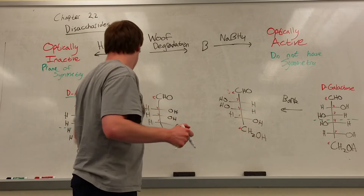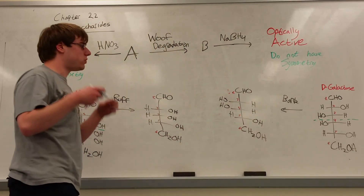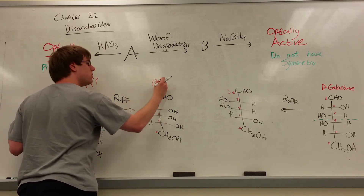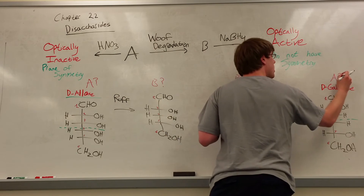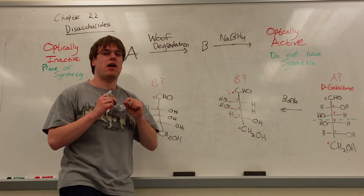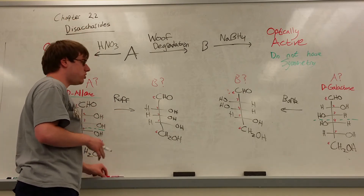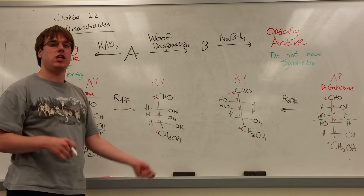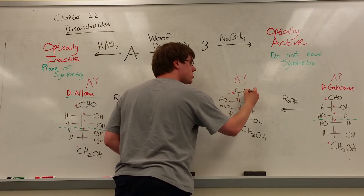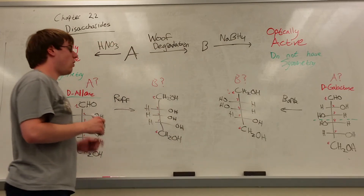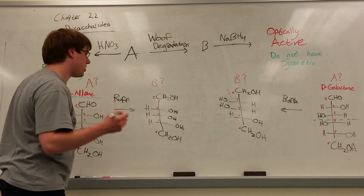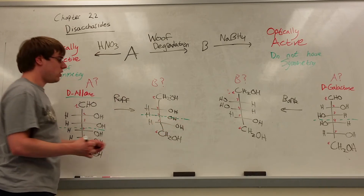We're told that structure B, when reacted with NABH4, becomes an optically active molecule — one that does not have a plane of symmetry. NABH4 turns the CHO group into a CH2OH group. So we apply that to both possible B structures and check which one lacks a plane of symmetry.